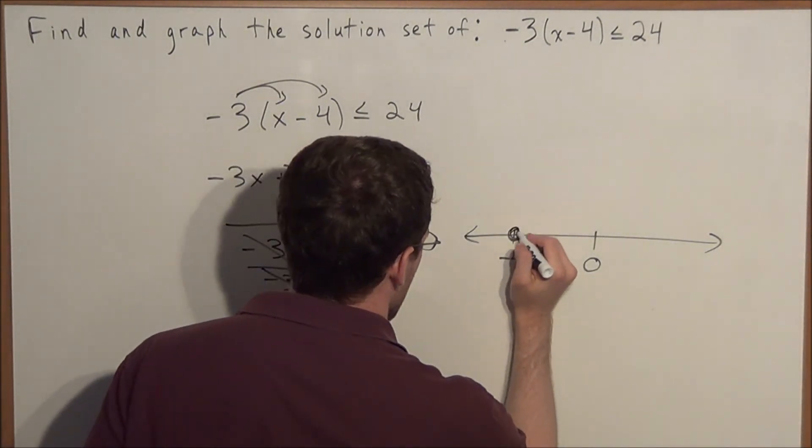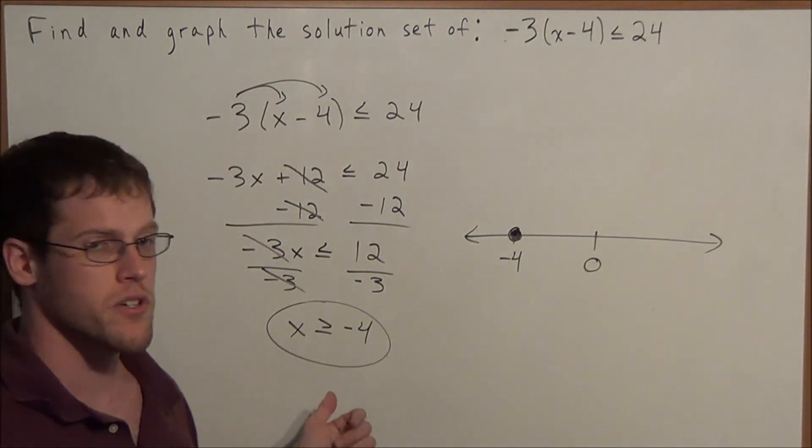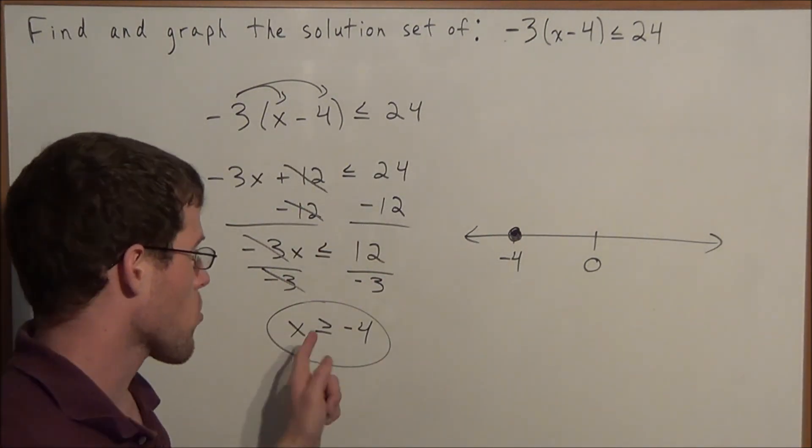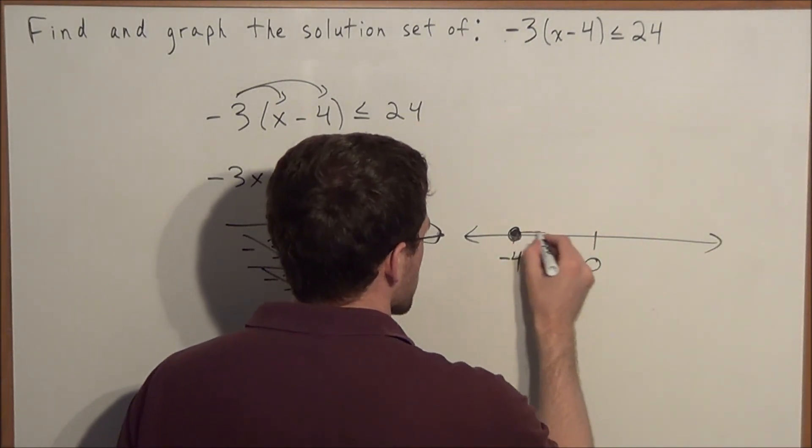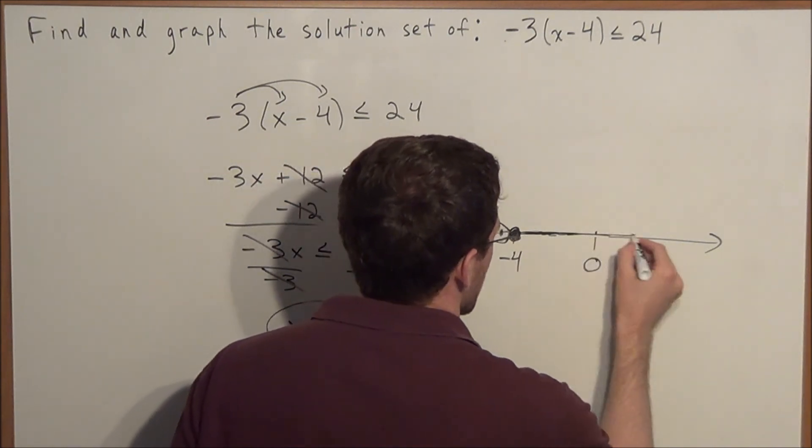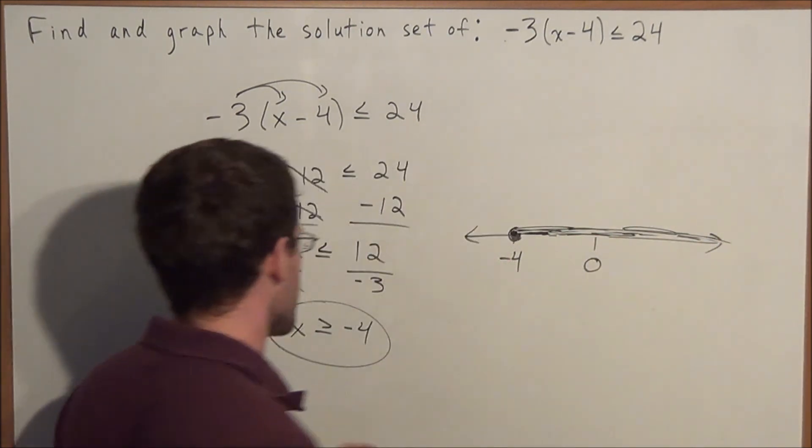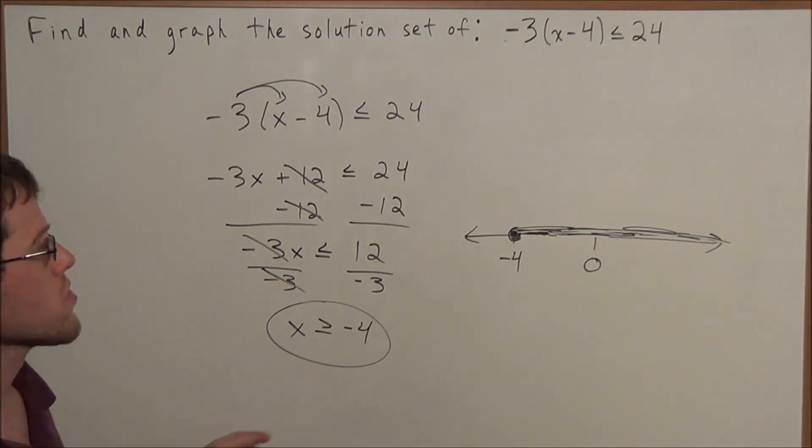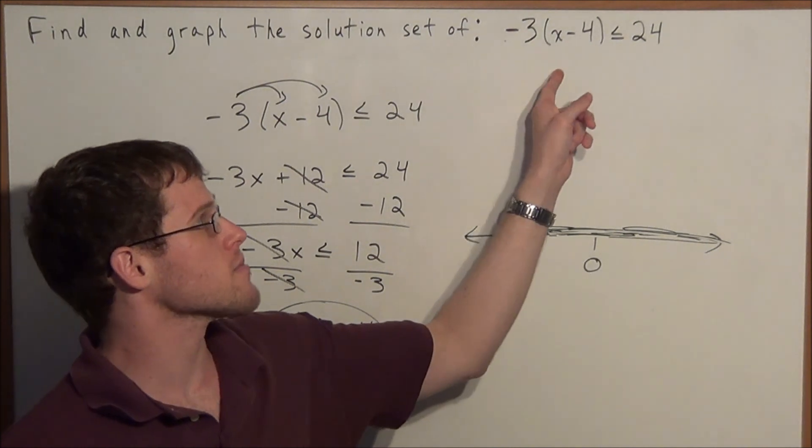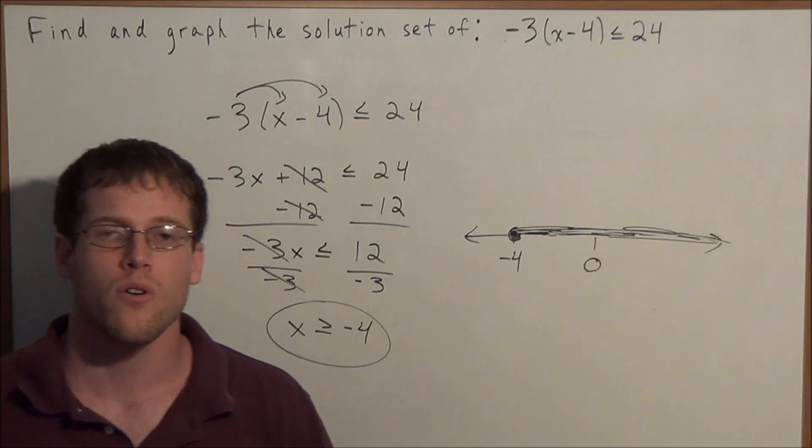We're going to put a closed circle at -4 to indicate that -4 is one of our solutions. Now what are all the x values that are greater than -4? Everything to the right of -4. So we color in everything going to the right of -4 to indicate x ≥ -4. So this is our solution to -3(x - 4) ≤ 24: x ≥ -4.